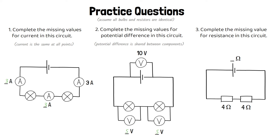The total resistance is the sum of the resistances of all the individual components. So if the two resistors have a resistance of four ohms each, the total resistance for the circuit will be eight ohms.